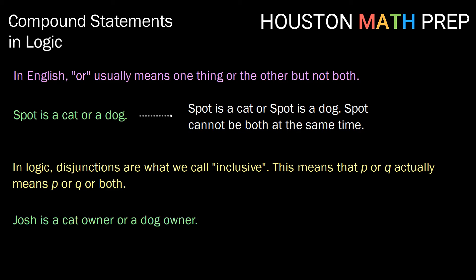So our statement Josh is a cat owner or a dog owner actually means Josh owns a cat, Josh owns a dog, or Josh owns both a cat and a dog. So disjunctions in logic are inclusive. All right guys, that does it for this video on compound statements in logic. To see more of this keep on watching and we'll see you in the next video.